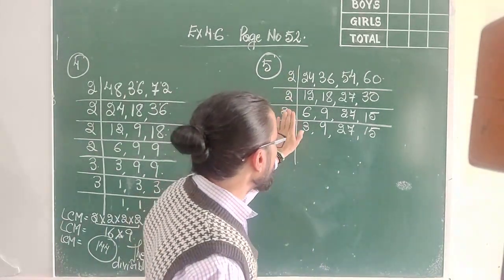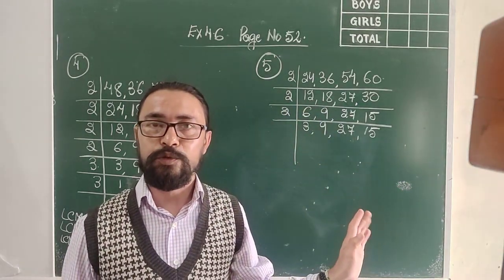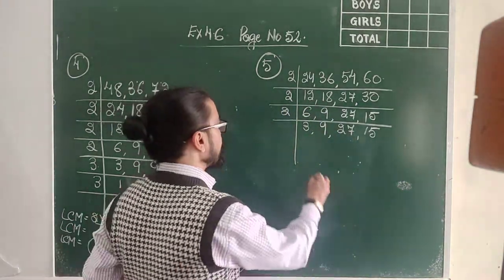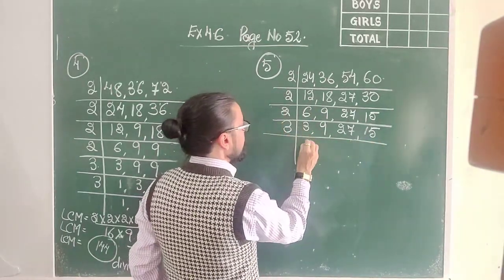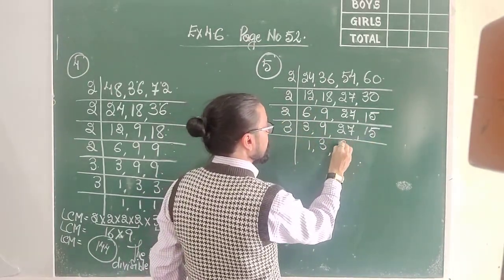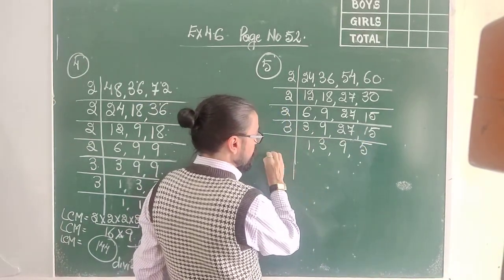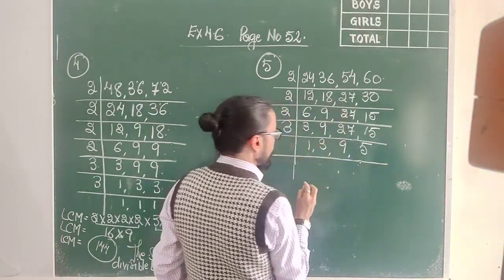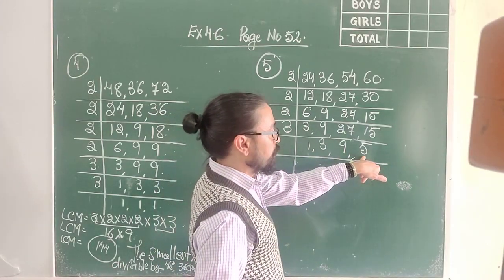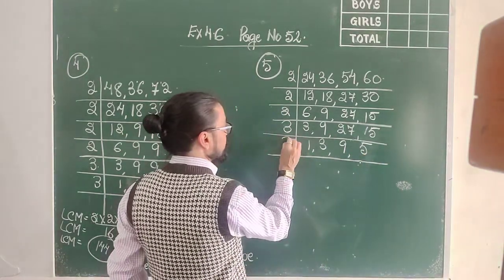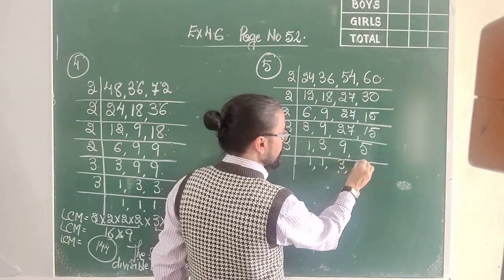We were dealing with 2, but now none of these numbers are divisible by 2, so I stop dividing by 2. I go to the next prime number, which is 3. All are divisible by 3: 3 ones are 3, 3 threes are 9, 3 nines are 27, 3 fives are 15. I've got my first 1, which goes to the end of the sum. 3 divides 3, 3 divides 9, but does not divide 5 — 5 will be copied down.